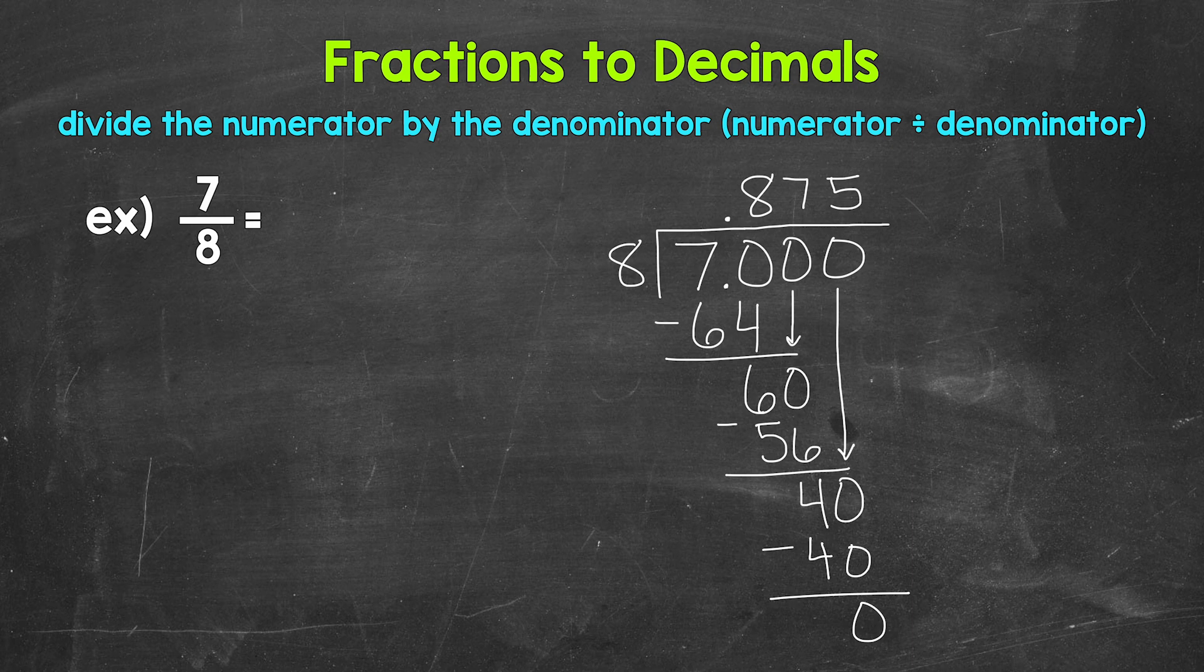7 eighths equals 875 thousandths. So let's write this over here. 7 eighths equals 0.875, 875 thousandths.